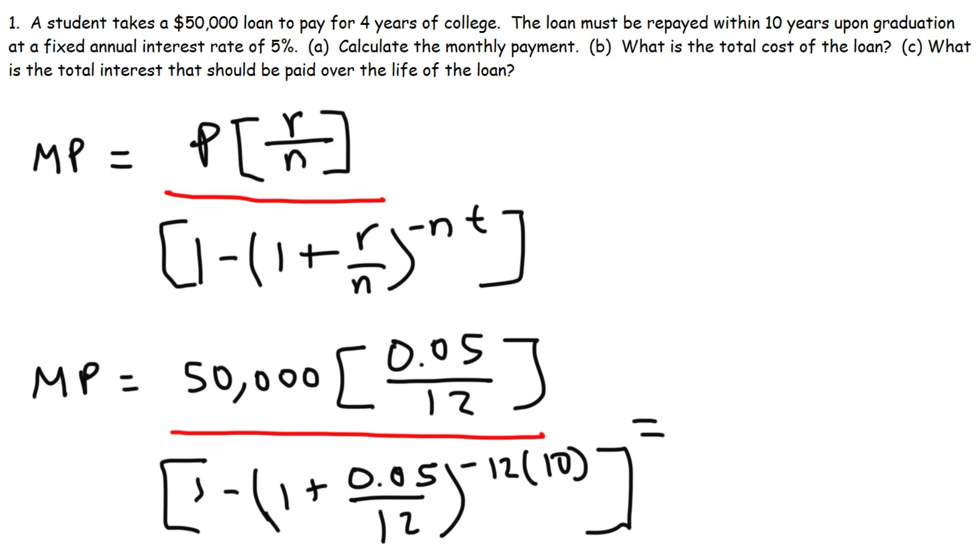So let's do this one step at a time. Let's begin by plugging in the top numbers. 50,000 times 0.05 divided by 12. That's 208.3 repeating. Then we're going to divide that by 1 minus, let's plug in this in. So 1 plus 0.05 divided by 12. That's 1.00416 repeating. Negative 12 times 10, that's negative 120.